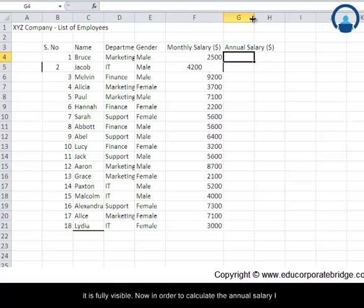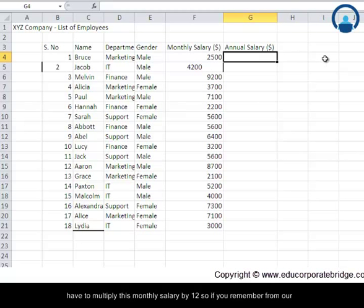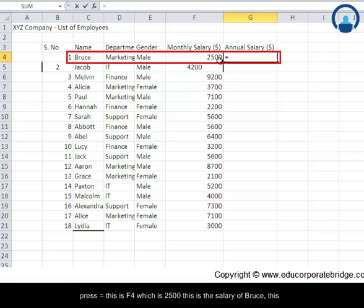Now in order to calculate the annual salary I have to multiply this monthly salary by 12. So if you remember from our previous calculation exercise the first thing I may have to do is to press equal to. This is F4 which is 2500, this is the salary of Bruce, this multiplied by - so we need to choose the multiplication sign and annual salary is basically monthly salary multiplied by 12. So you can manually input this number 12 in order to calculate the annual salary and you can press enter.